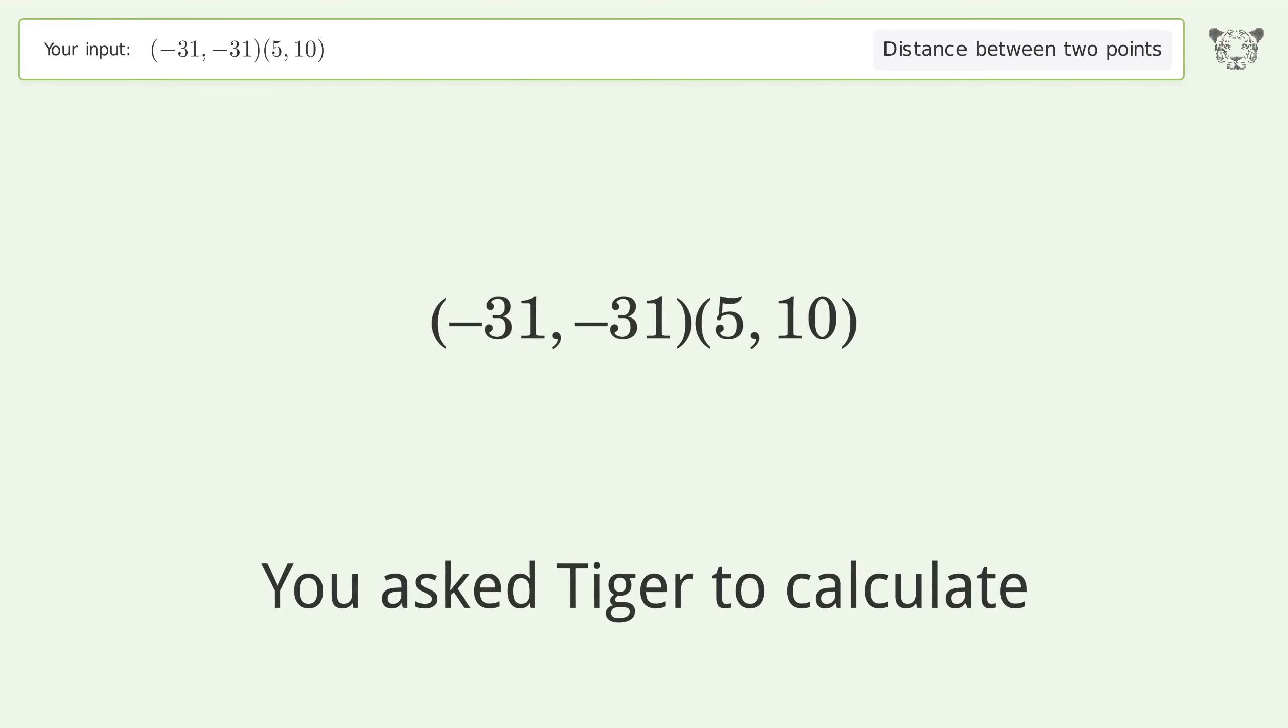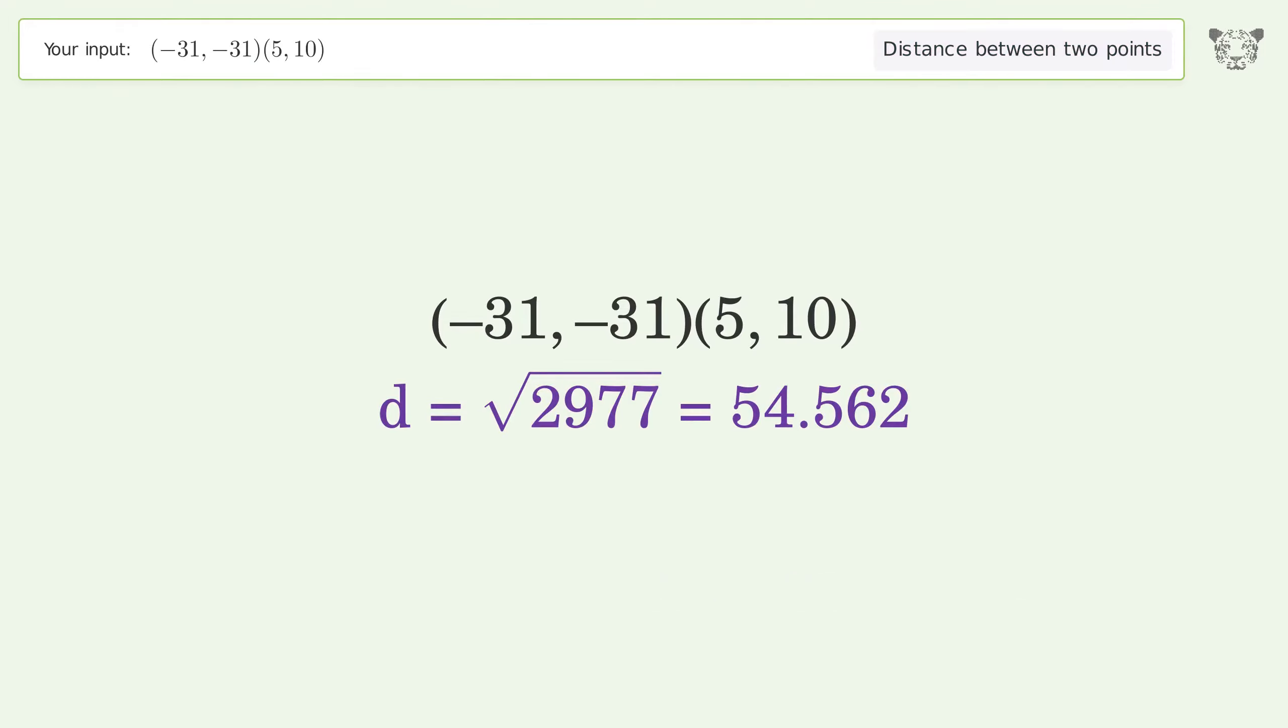You asked Tiger to calculate the distance between two points. The distance between the two points is the square root of 2977 or 54.562.